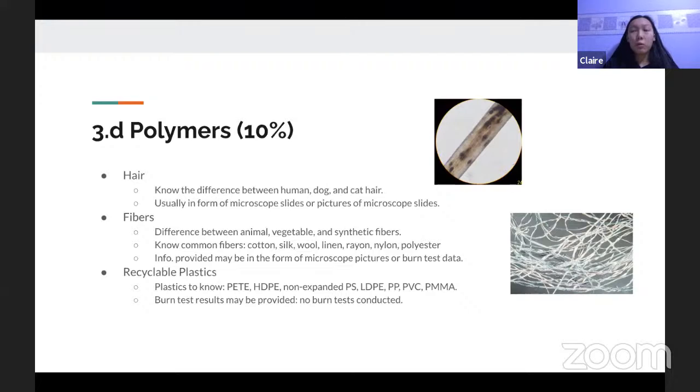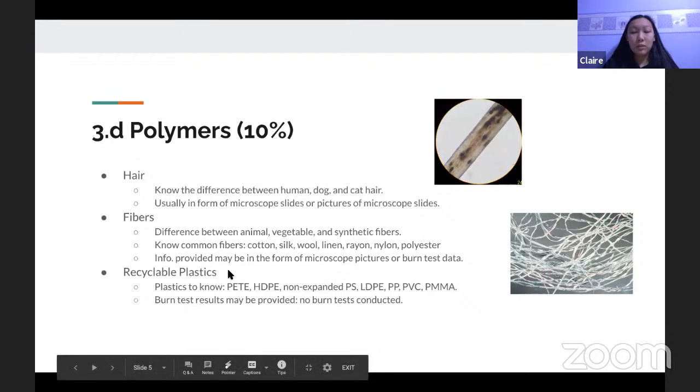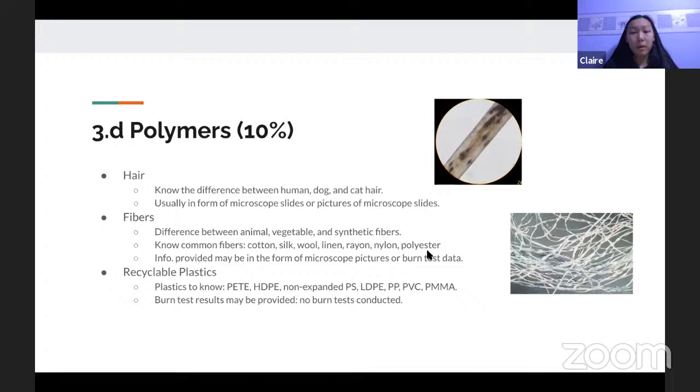Now, for the fibers, usually they'll only ask you to distinguish between an animal vegetable and or synthetic fiber. However, there are some exams that actually do ask you to identify them specifically, but it's not very common. But if they do, they would usually test cotton, silk, wool, linen, rayon, nylon, and polyester, among others. And either they'll give you pictures of the fibers under a microscope. For example, here, this one's cotton. So, you'll have to be able to identify the distinguishing characteristic of these fibers under a microscope. Like cotton is like a twisting band. Wool has a rough kind of looking exterior. All the synthetic fibers look very smooth.